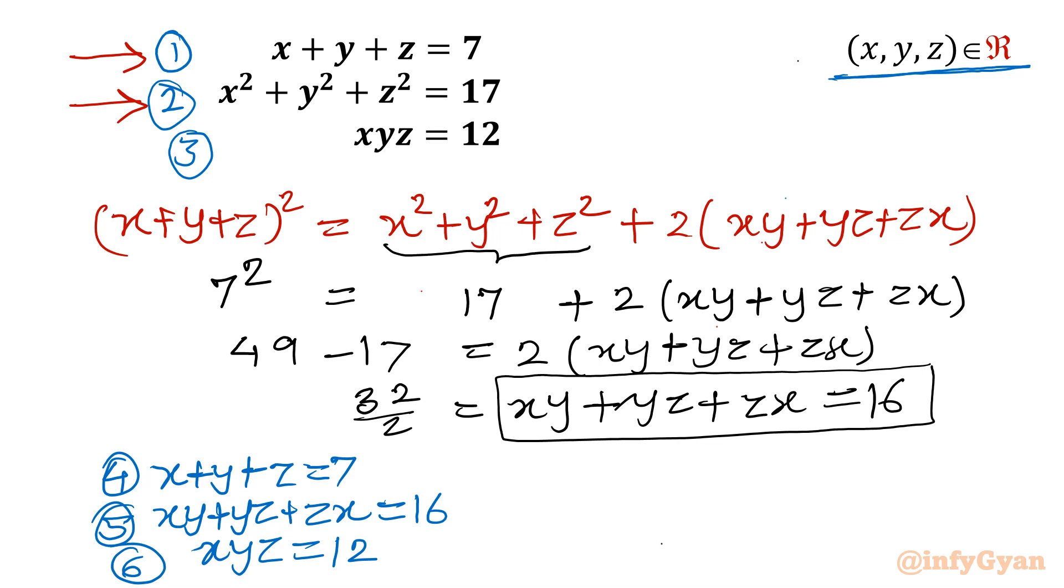Few conclusions I will conclude from here. Point number 1: This is sum of roots. Any cubic equation whose roots are xyz, then it is sum of roots. Second equation means equation number 5, it is sum of roots taken 2 at a time. And third equation, that means equation number 6, xyz equal to 12, it is product of roots.